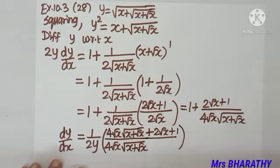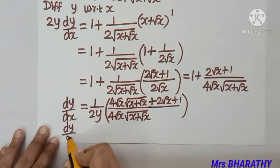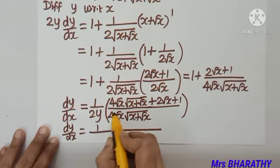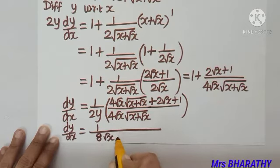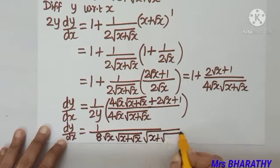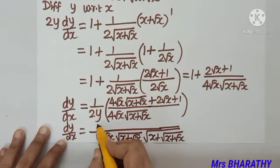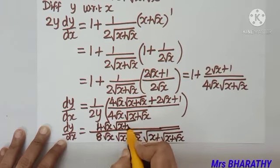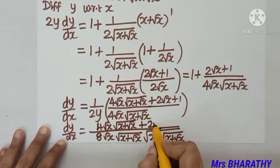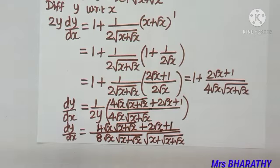Bringing 2y to the denominator and substituting y = √(x + √(x + √x)), we get dy/dx = [4√x·√(x + √x) + 2√x + 1] divided by [8√x·√(x + √x)·√(x + √(x + √x))]. That is the final answer.